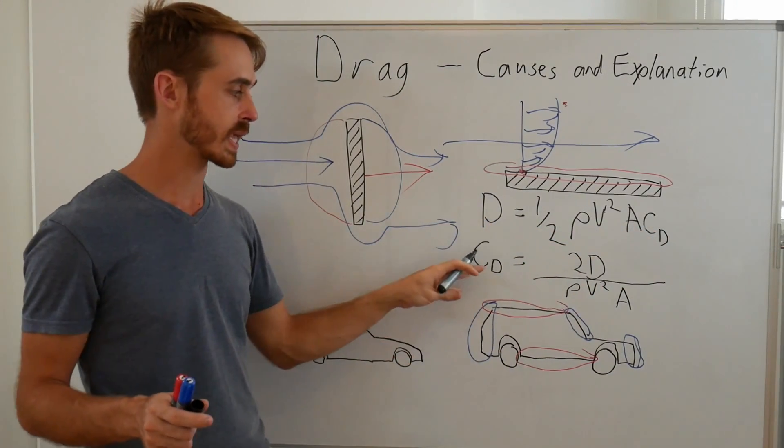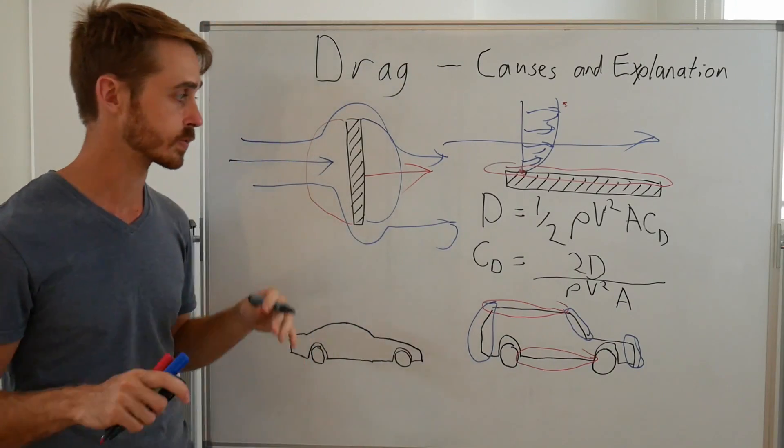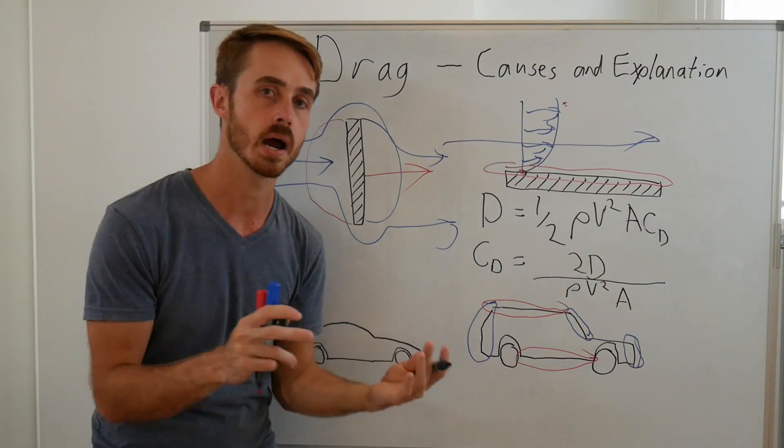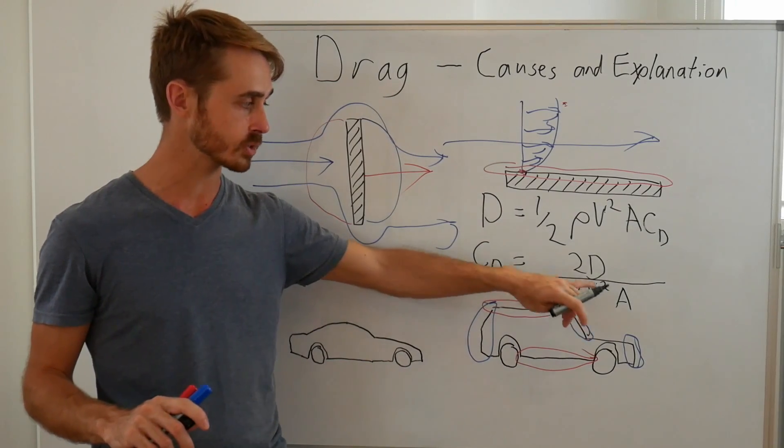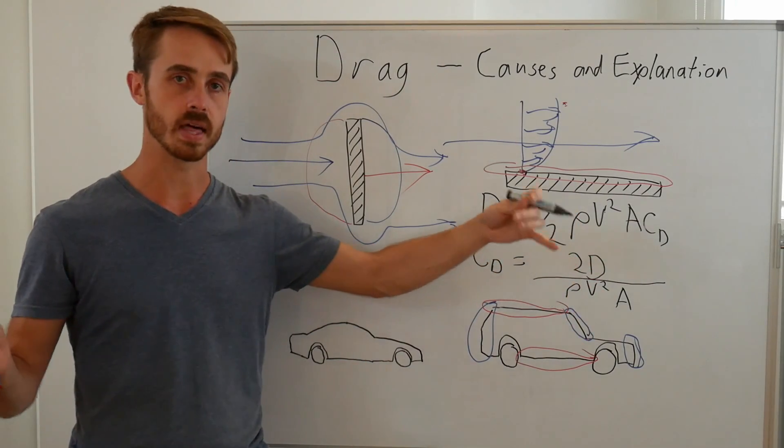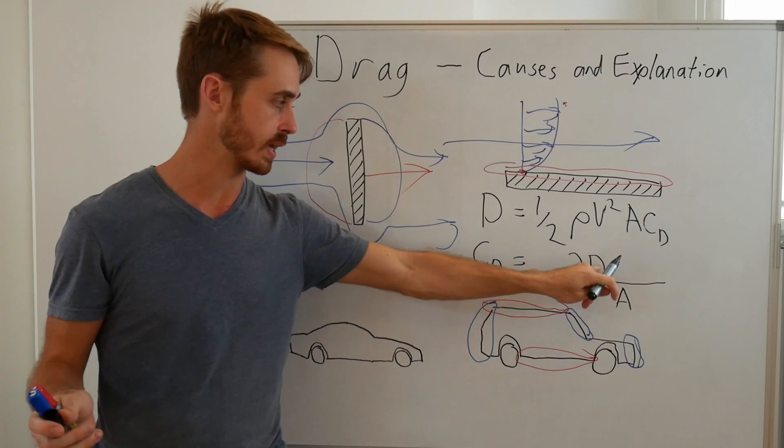And the bottom one is what we use to calculate the CD for a given car. So basically let's say we test our car in the wind tunnel. We test it at say 20 meters per second, we put that in as the velocity. We get a drag value of say 100 newtons, we put that in as our drag.